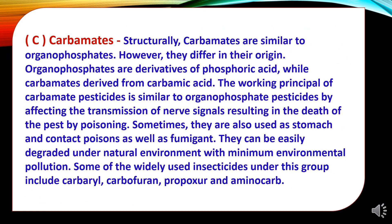The third pesticide group is carbamates. Structurally, carbamates are similar to organophosphates, however they differ in their origin — organophosphates are derivatives of phosphoric acid while carbamates are derived from carbamic acid. The working principle of carbamate pesticides is similar to organophosphate pesticides, affecting the transmission of nerve signals, resulting in the death of the pest. They are also used as stomach and contact poisons as well as fumigants, and can be easily degraded in the natural environment with minimum environmental pollution. Widely used insecticides under this group include carbaryl, carbofuran, propoxur and aminocarb.